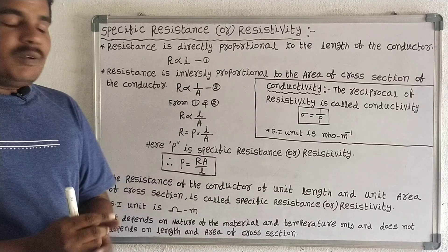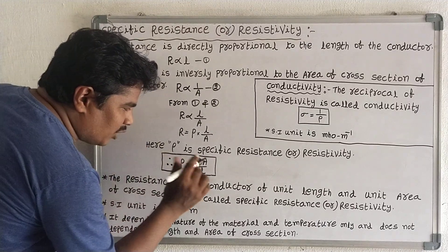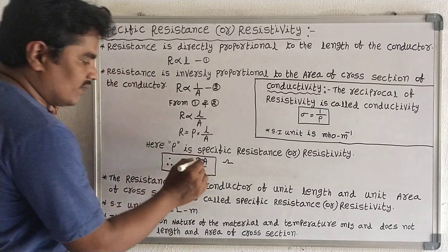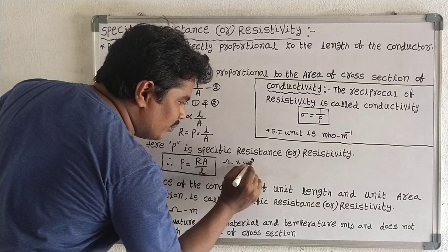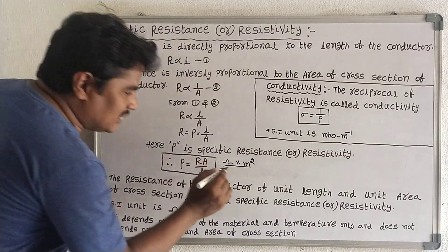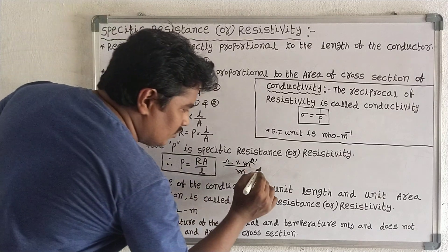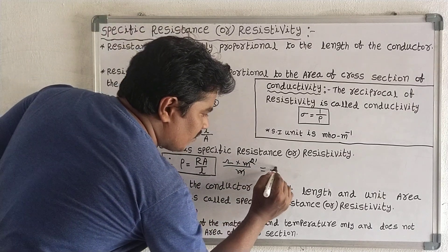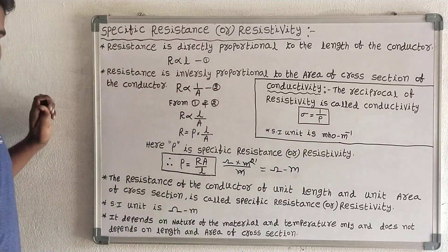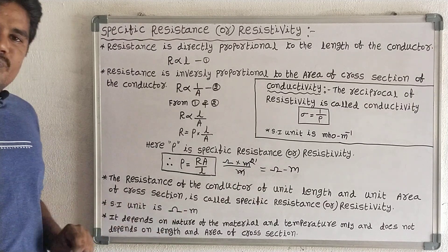Now we write the SI units. From the formula only, we write the SI units. The SI unit of resistance is Ohm. The SI unit of area is meter square, divided by the SI unit of length which is meter. Here, one meter cancels, we get one meter only. So finally, the SI unit of resistivity or specific resistance is Ohm meter.